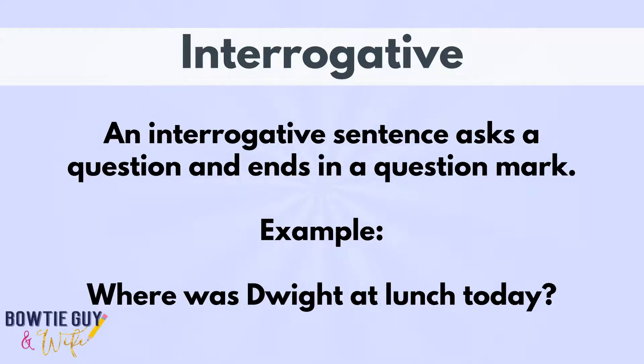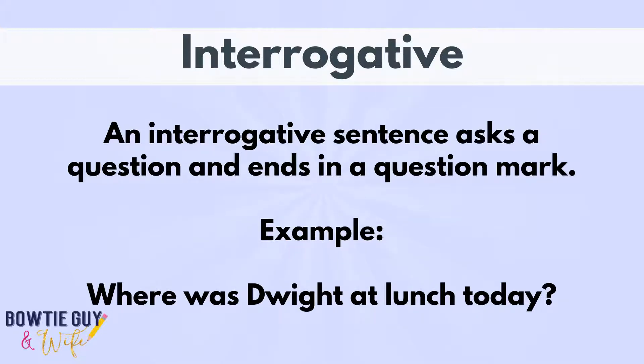An interrogative sentence asks a question and ends in a question mark. Here's an example: Where was Dwight at lunch today?